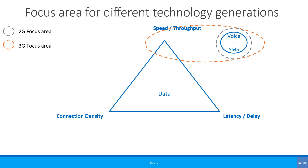3G's focus was higher speed data and continuation with voice and SMS. 4G's focus was even higher speed data. Interestingly, as 4G was so focused on high speed data, it overlooked voice somewhat. As a result, it had to initially rely on 2G and 3G for voice, and later added VoLTE. More details on this can be found in our video on 4G voice options.